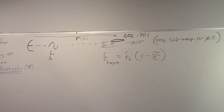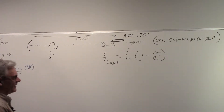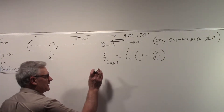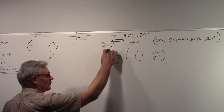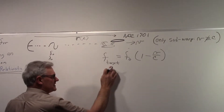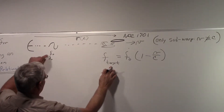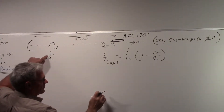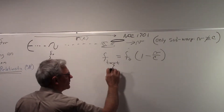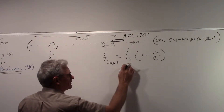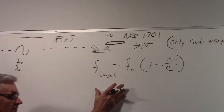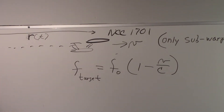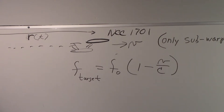From part one, the frequency seen at the target — in this case the Enterprise — was f_target equals f0 times (1 minus v over c). But this is the non-relativistic case. So how do we bring in the relativistic case?